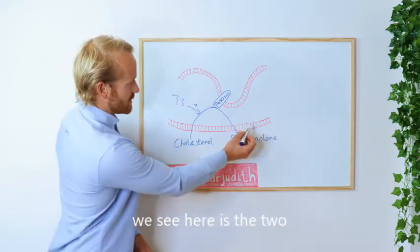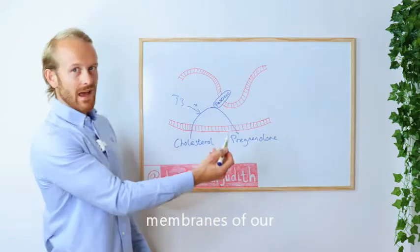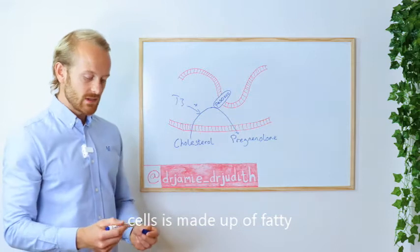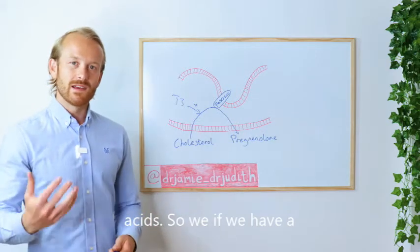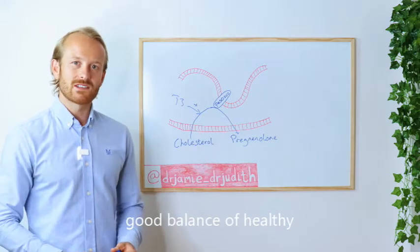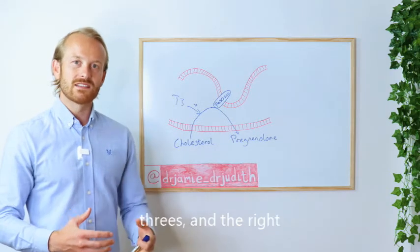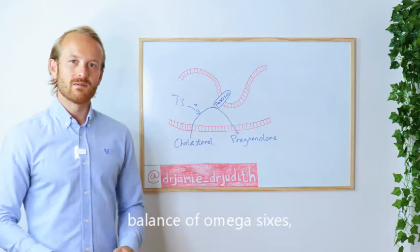So what we see here is the two membranes of our mitochondria. The membrane, like all of our cells, is made up of fatty acids. So if we have a good balance of healthy fats in the diet, especially like omega-3s and the right balance of omega-6s, this membrane is going to be functioning optimally.